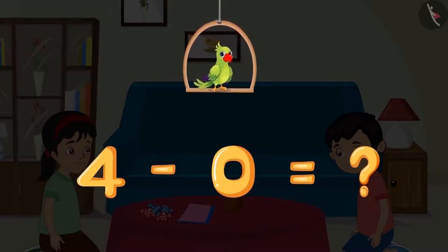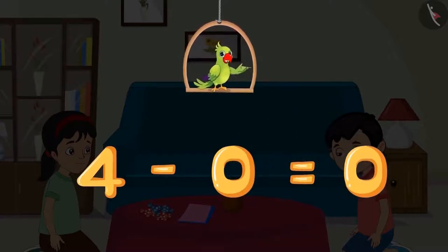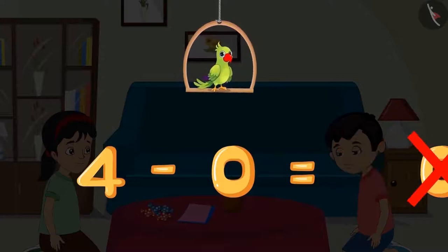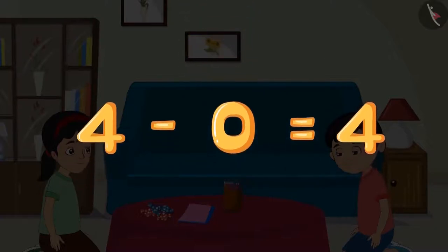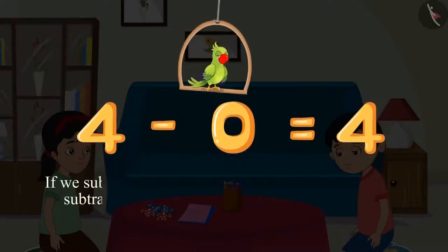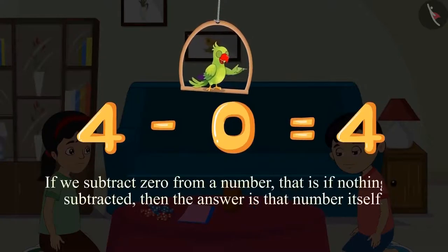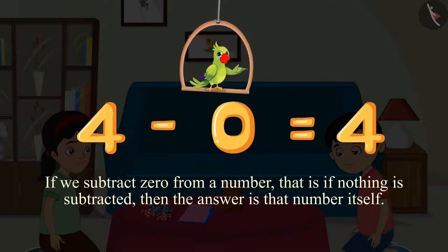Can you tell me the answer? Do you think the answer for this will be zero? No. The answer will be four. This means four minus zero equals four. If we subtract zero from a number, that is if nothing is subtracted, then the answer is that number itself.